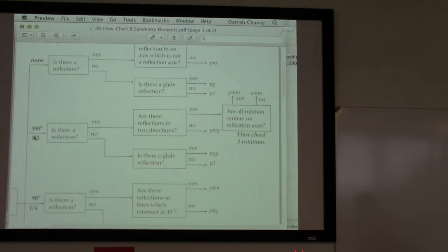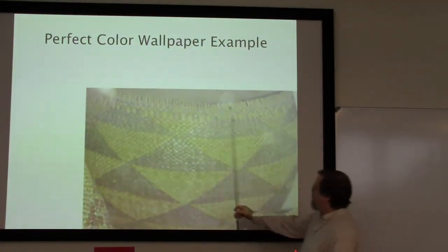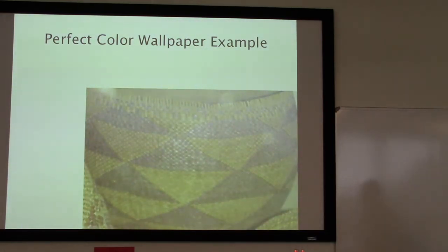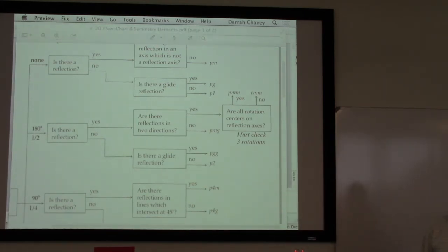Looking at the flow chart: we found one-half rotation, said yes there is a reflection, and then asked: are there reflections in two different directions? Unless stated otherwise, we're looking for horizontal and vertical reflections. After saying yes to that, we have to ask the challenging question: are all rotation centers on reflection axes? We need to find at least three different rotations to ask that question.